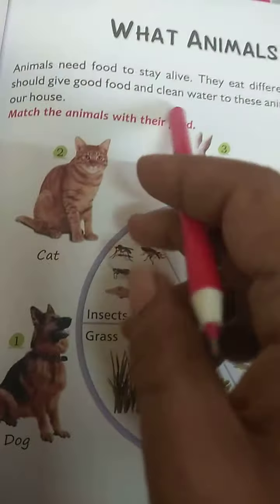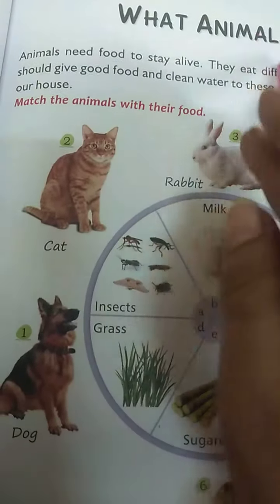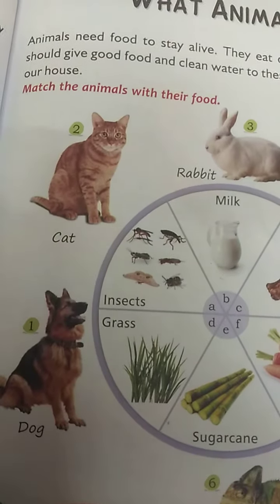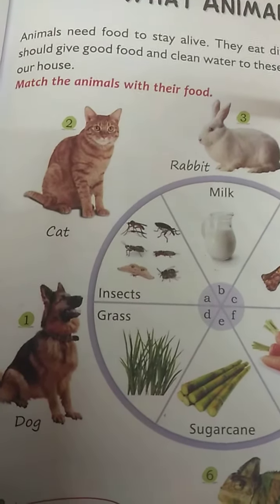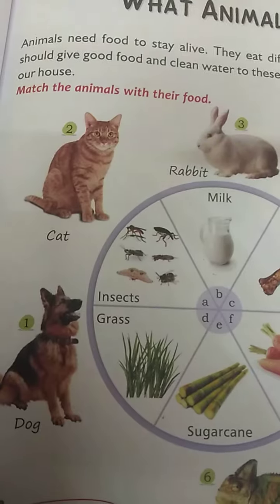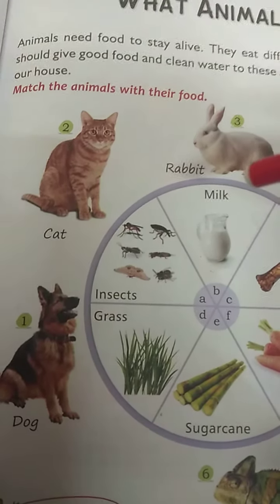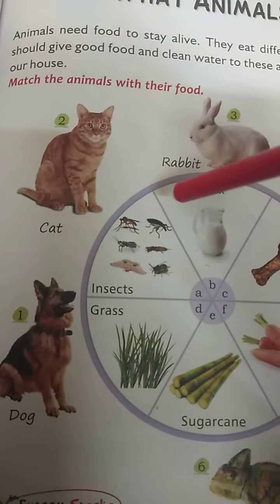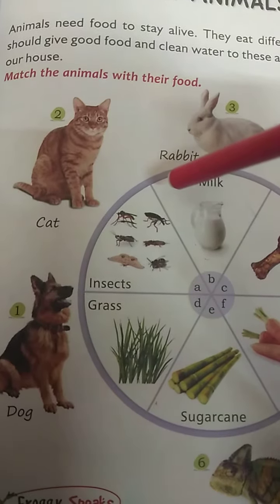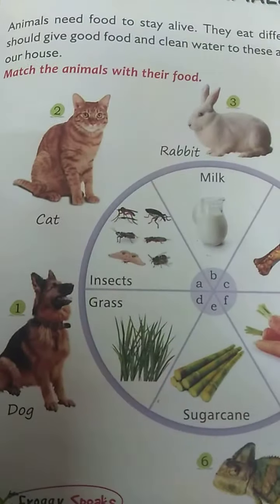Today's GK topic is what animals eat. Why do we eat? We eat because food gives us strength — we already know that. Why do animals need food? Because animals need food to stay alive.